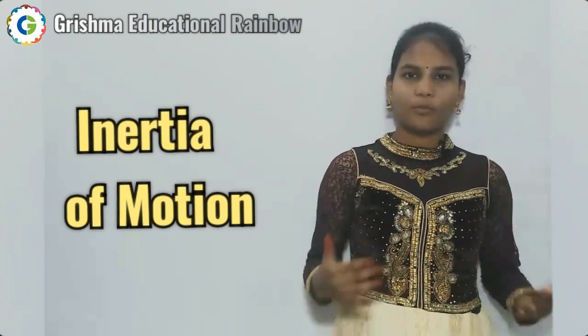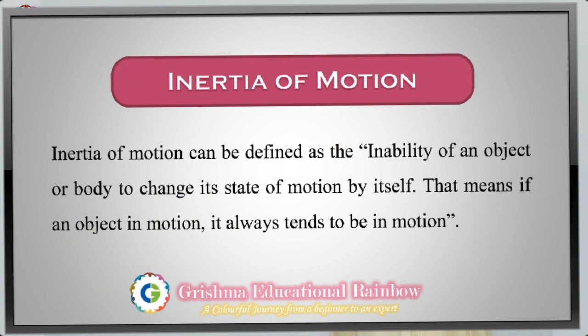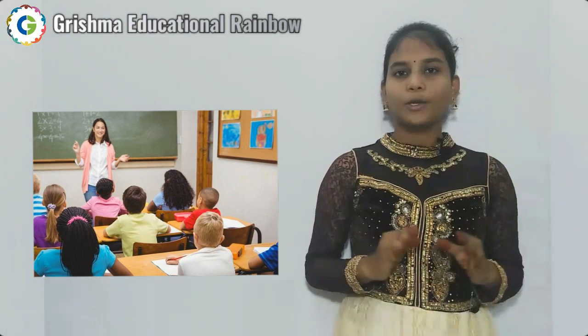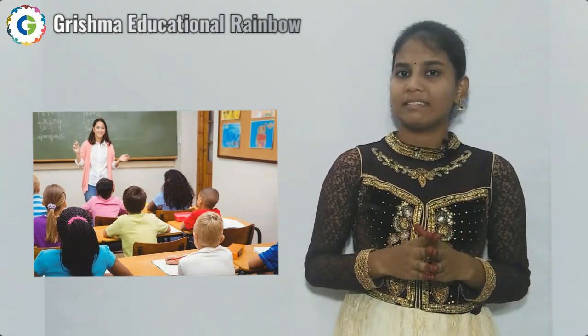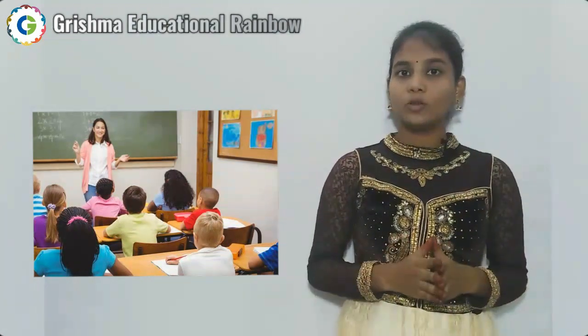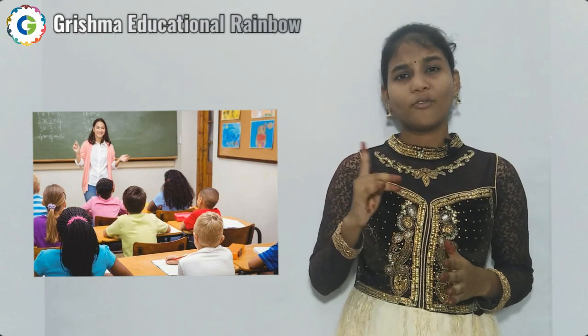Now let us understand the second type: inertia of motion. Inertia of motion can be defined as the inability of an object or body to change its state of motion by itself. For example, you are in class listening to your lesson when all of a sudden the power goes out. Even though there is no power supply, the fan still rotates for some time — the fan which is in motion continues to be in motion for a while. This is what inertia of motion says.